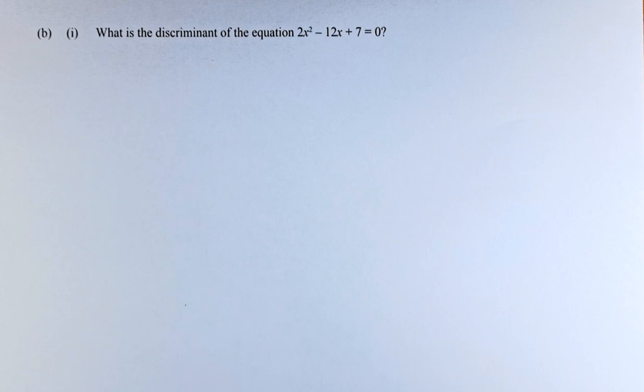The question, there are part 1 and part 2, so part 1 we will do first followed by part 2. Part 1 reads like this: What is the discriminant of the equation 2x² - 12x + 7 = 0?